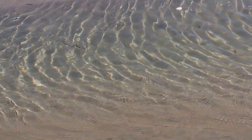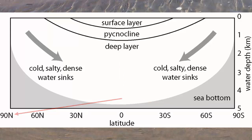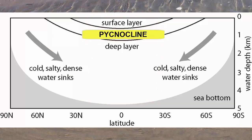Ocean currents are moving rivers of water. In this highly generalized bathtub cross-section of the ocean, the equator is in the center, the south pole to the right, and the north pole to the left. We also see three basic ocean layers: the surface layer, the deep layer, and the boundary between the two called the pycnocline — the boundary between two water layers of different density.